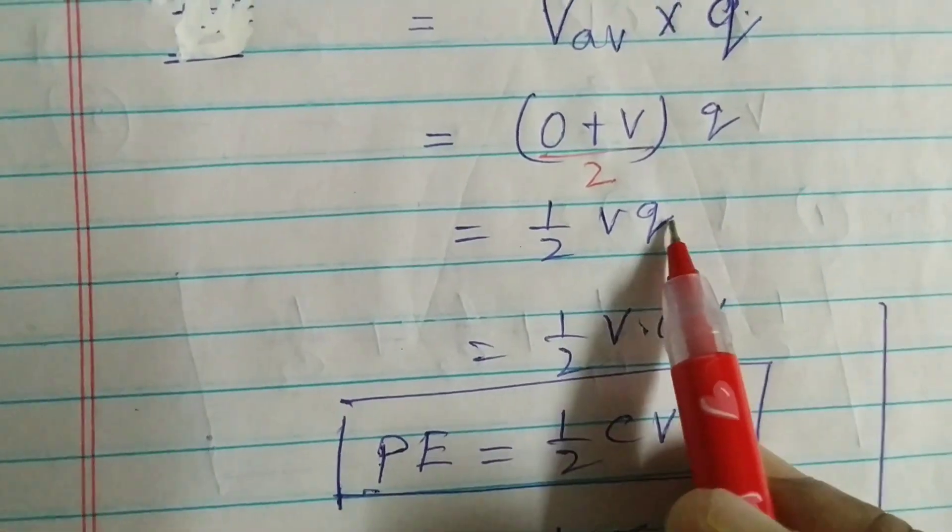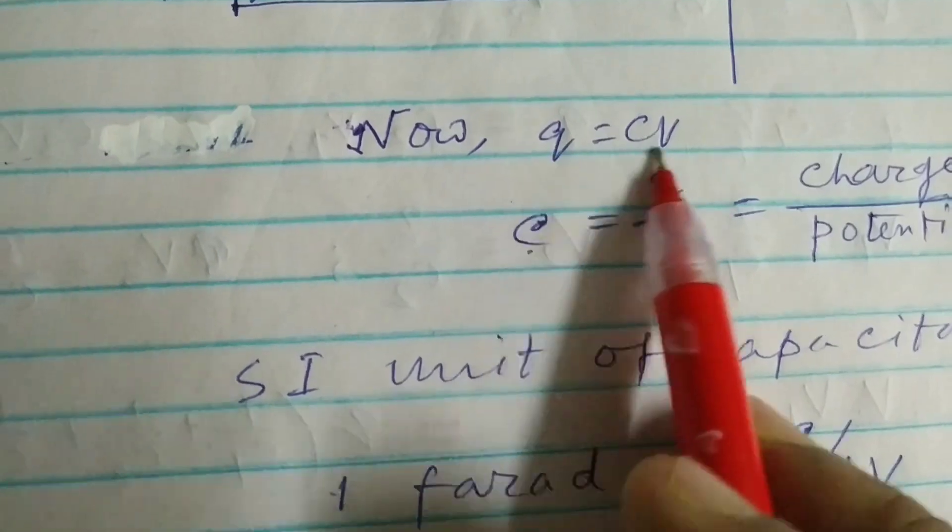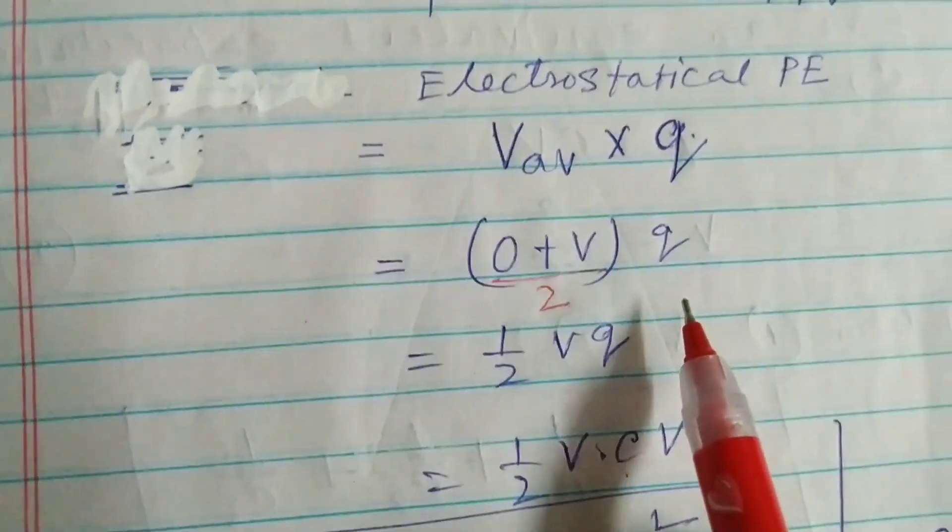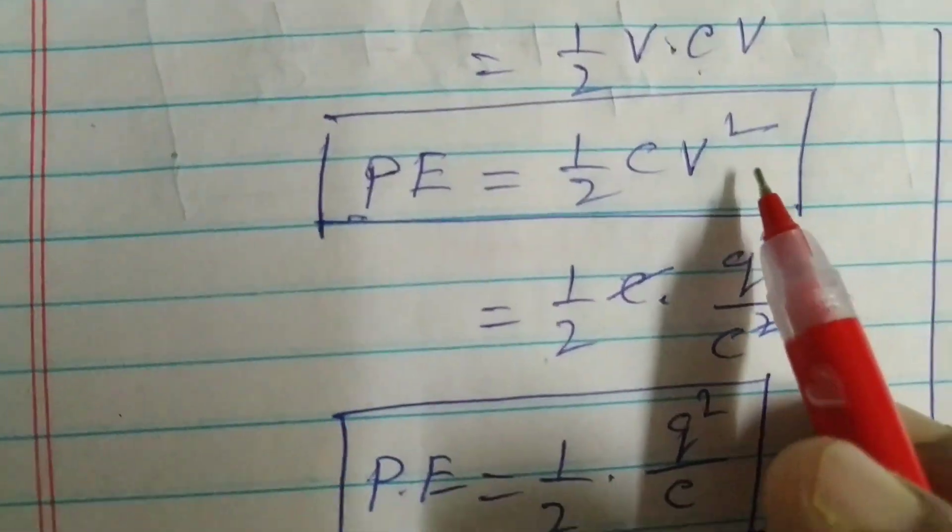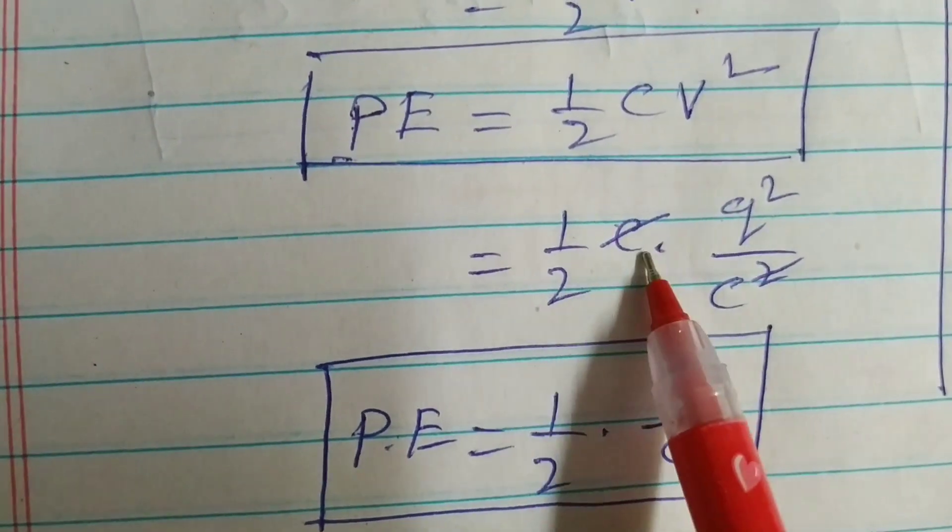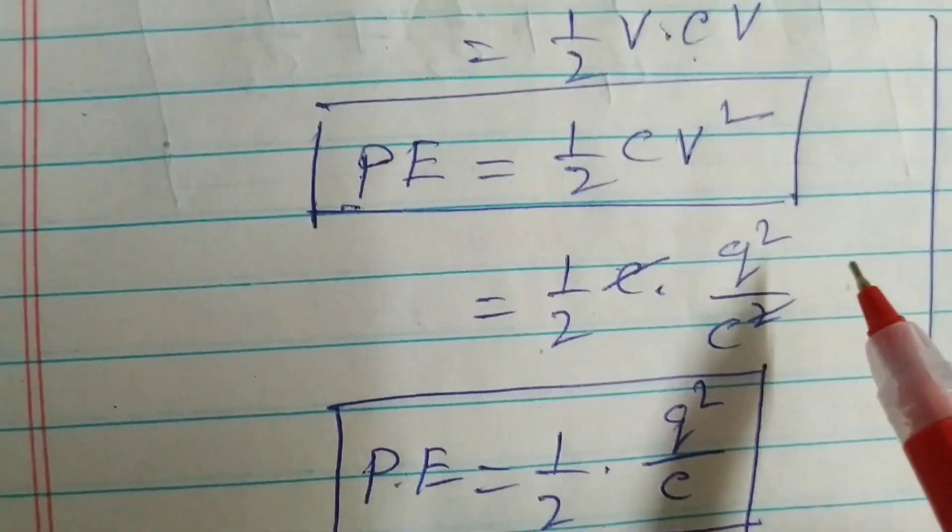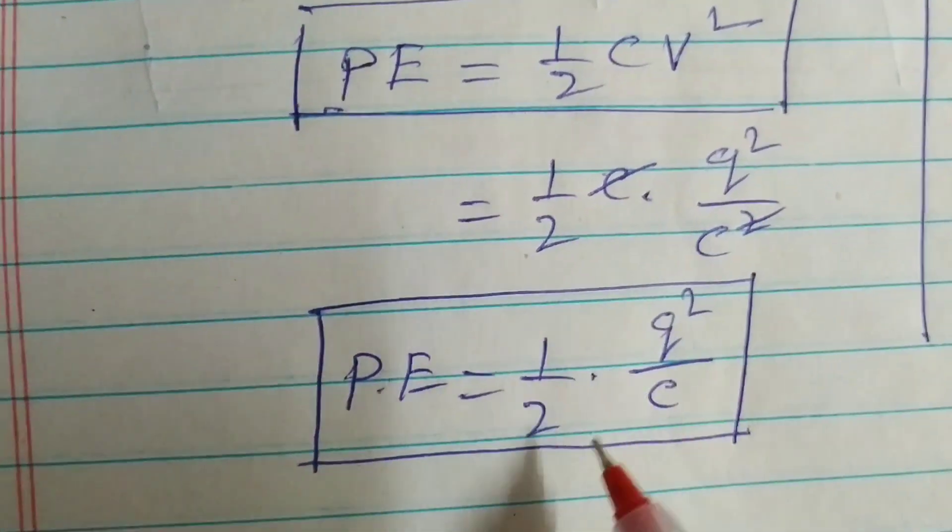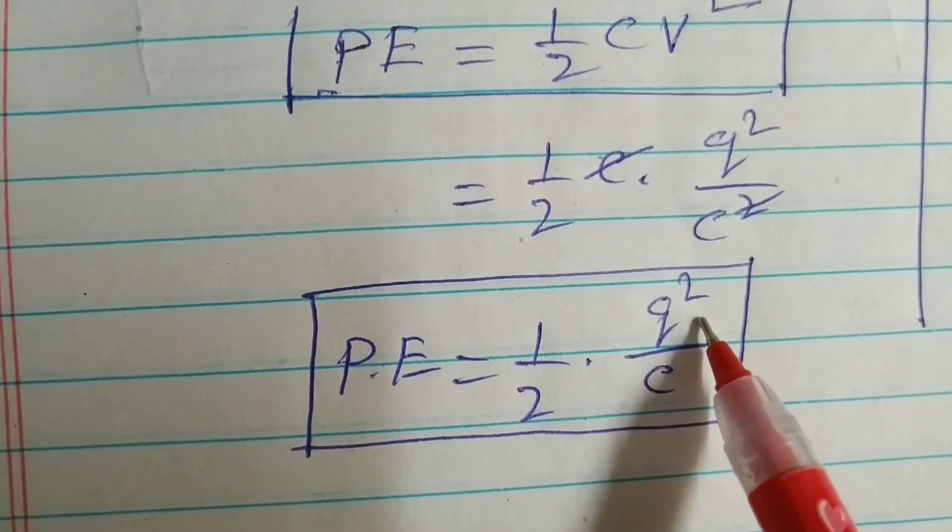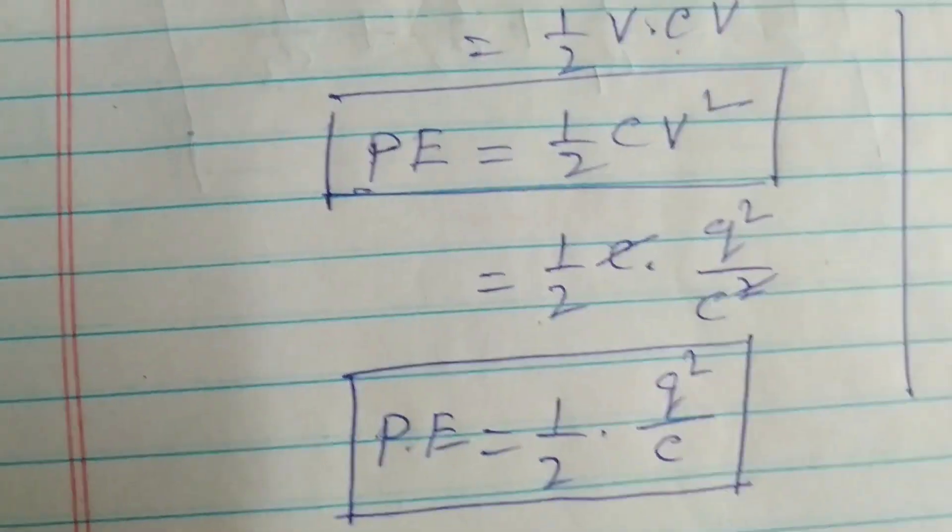Half VQ is replaced by CV according to our formula Q equals CV. So this is half V into CV. So potential energy is half CV squared. Again, half CV is replaced by Q, so Q by C whole squared. Q by C whole squared means Q squared by C squared. So it is cancelled and PE is half Q squared by C. So these are the two expressions for electrostatic potential energy.